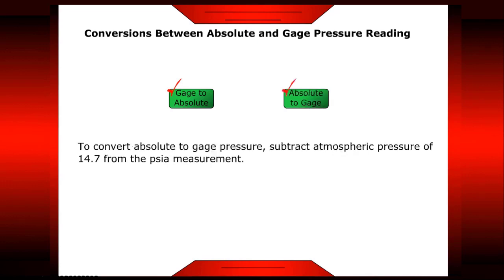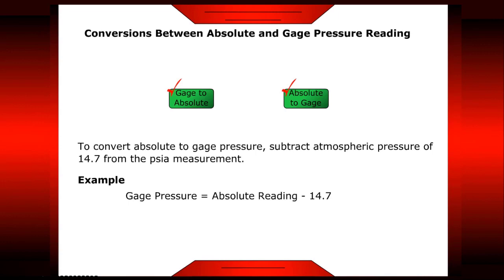To convert absolute to gauge pressure, subtract 14.7 from the absolute pressure value. For example: 30 pounds per square inch absolute minus 14.7 equals 15.3 pounds per square inch gauge.